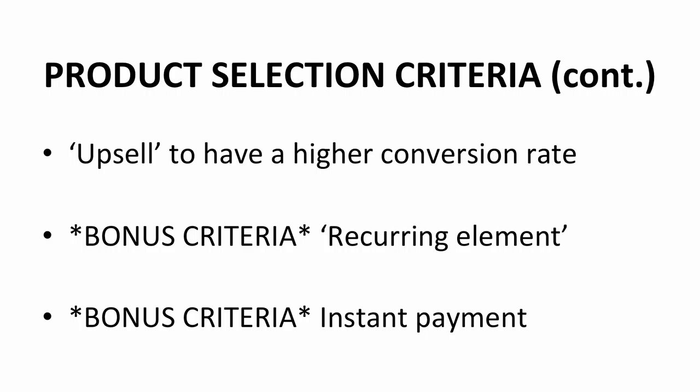Another bonus criterion is instant payment. When I first started, there was no instant payment — affiliates had to wait around 30 days before getting paid, because customers might ask for a refund. Now, however, sites like JVZoo provide a system called Tentative Payment, where you get instant payment. However, if a customer asks for a refund, they will retract your commission instantly.